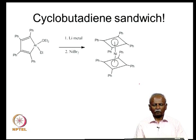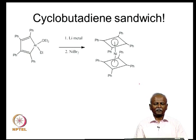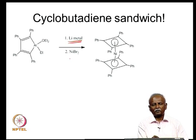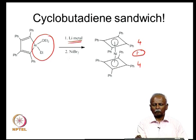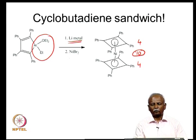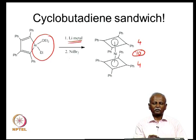A similar situation happens with cyclopentadiene in a rather unusual synthesis where an alumino-cyclopentadiene is reacted with lithium metal to reduce it in the presence of nickel bromide, giving elimination to form two 4-membered rings. This gives 4 + 4 = 8 electrons, so nickel is the ideal element because it has 10 electrons (3d8, 4s2). A nice bis-cyclobutadienyl nickel complex is formed.